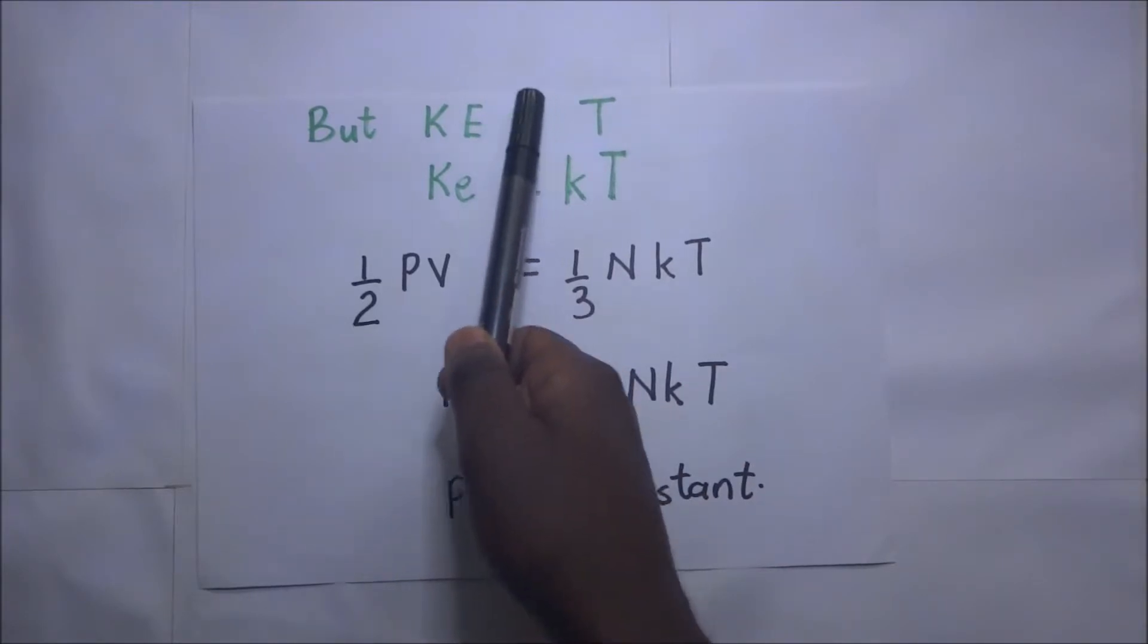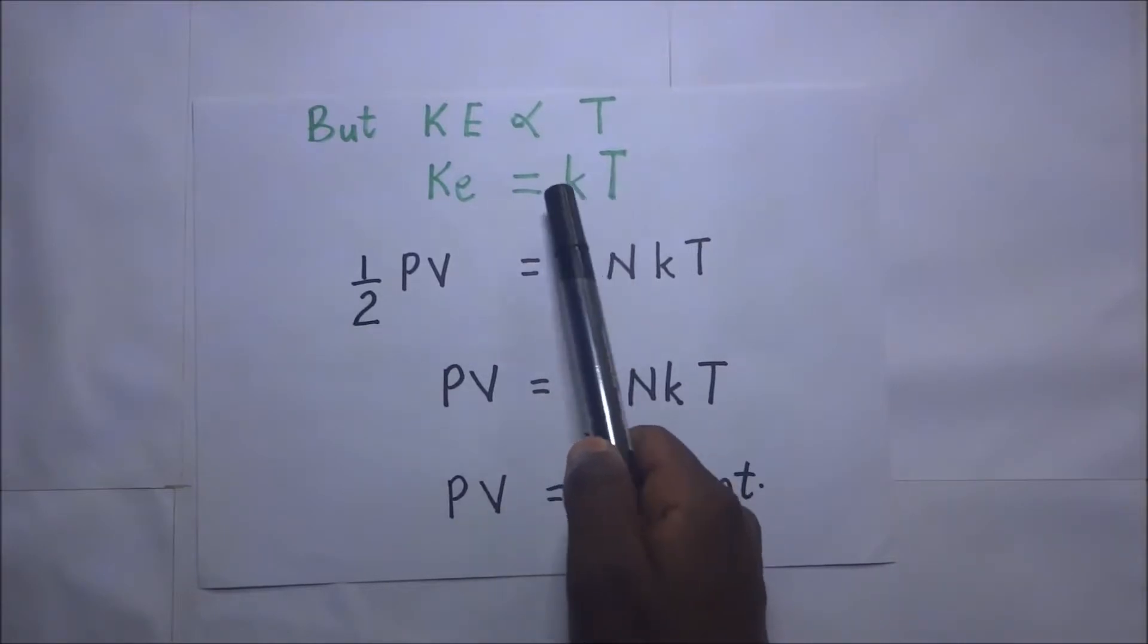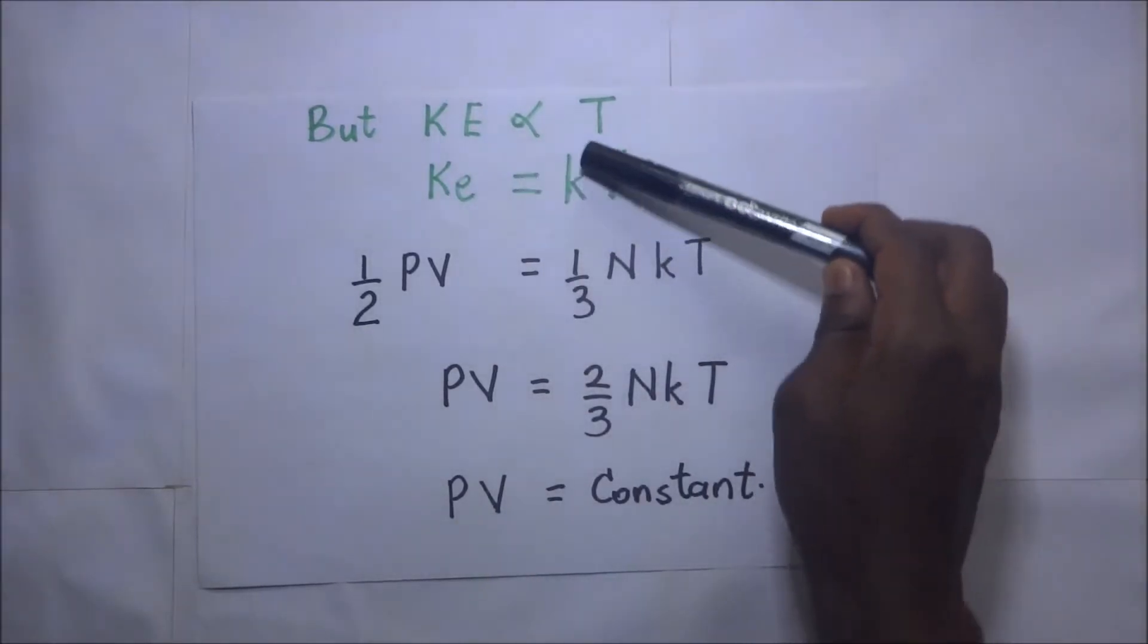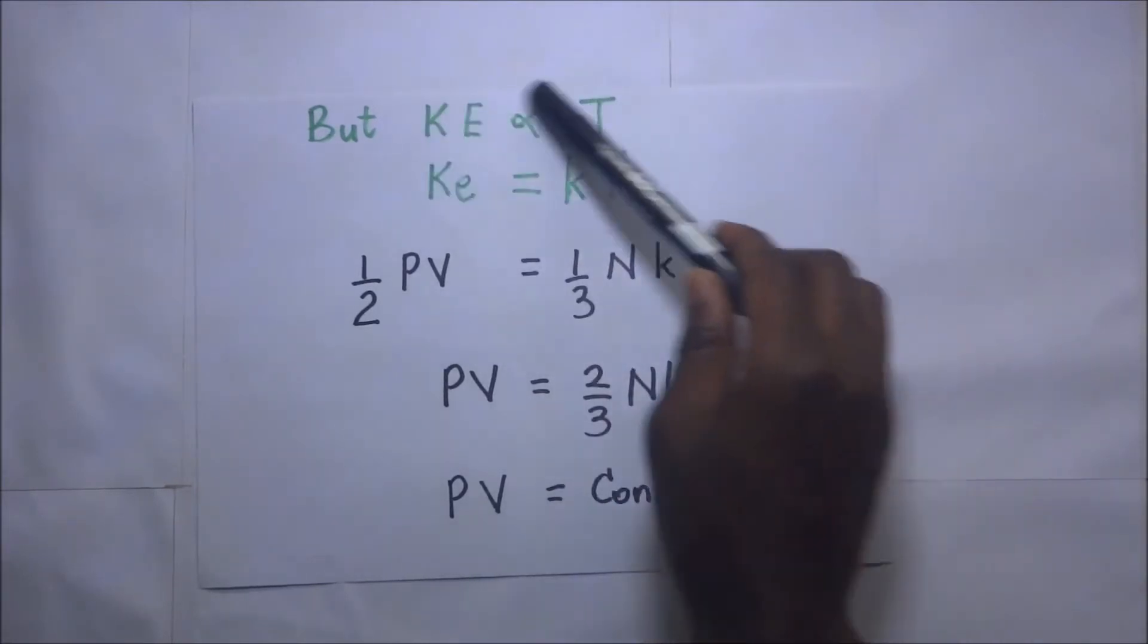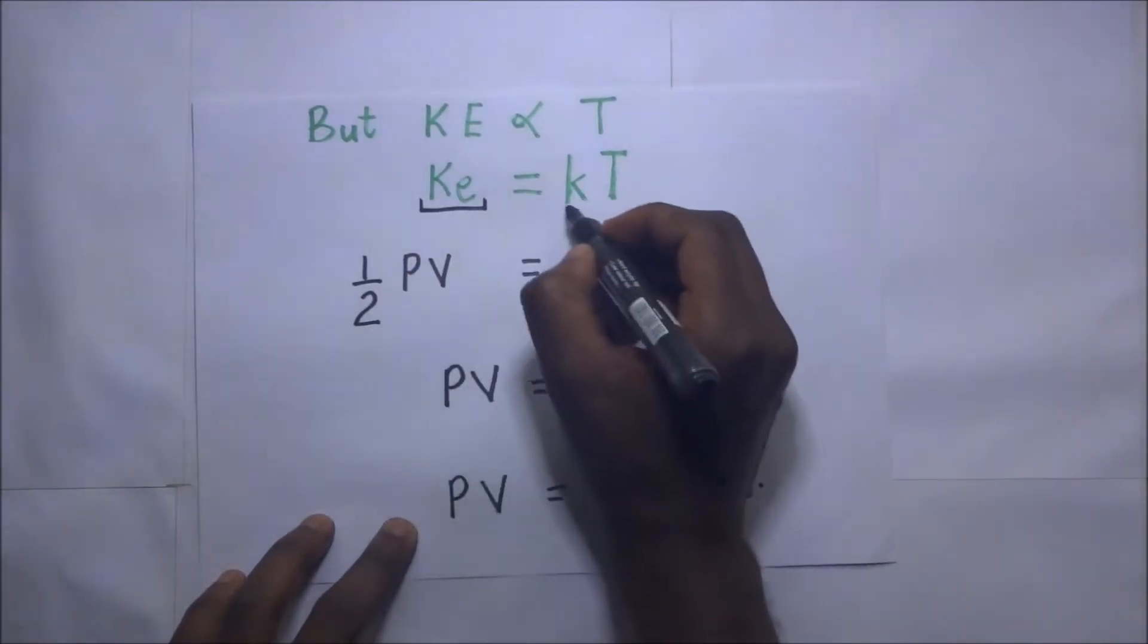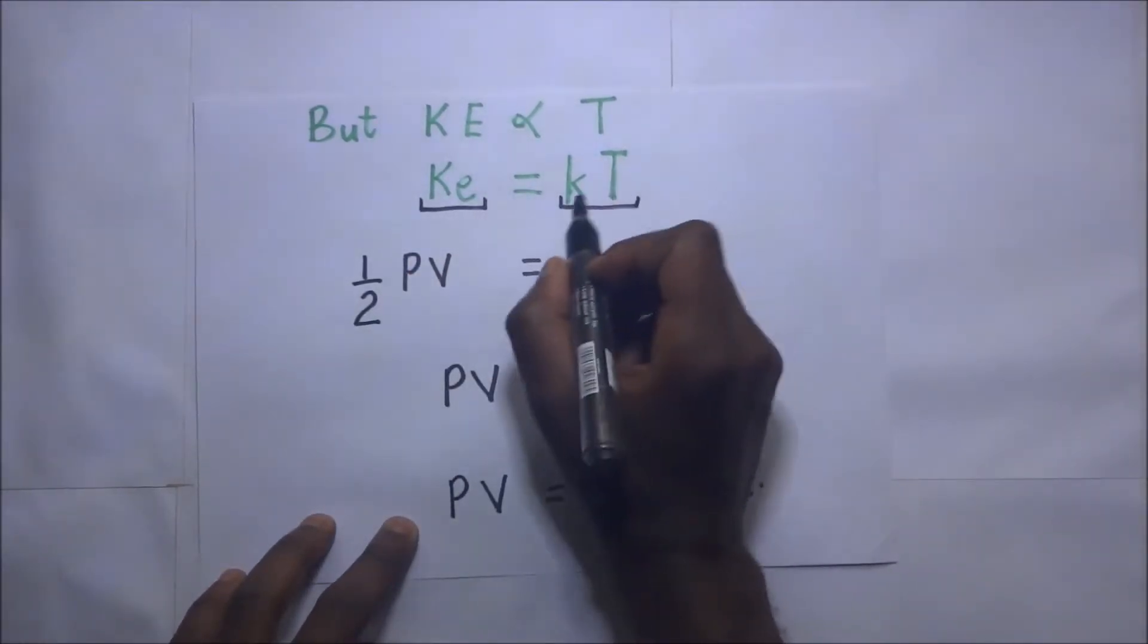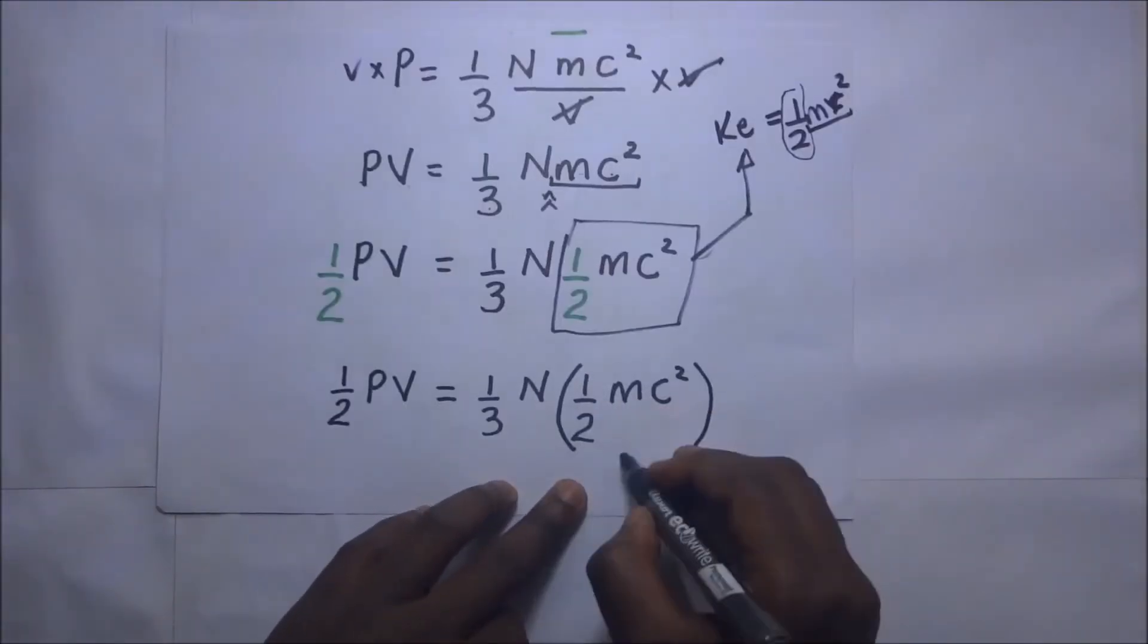for us to remove this proportionality sign, kinetic energy is going to be equal to K times T. So this is the constant of proportionality for this expression. It means that where there is kinetic energy, we are going to replace it with that K, the constant, and then the temperature. This right here is what became our kinetic energy.